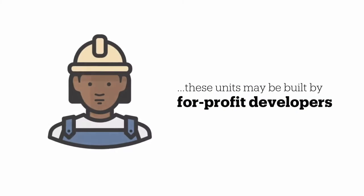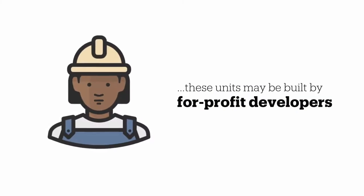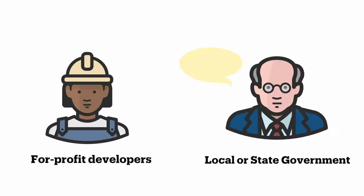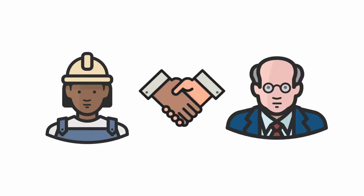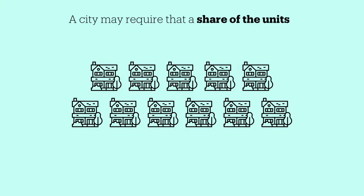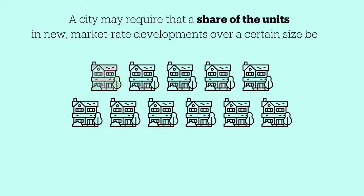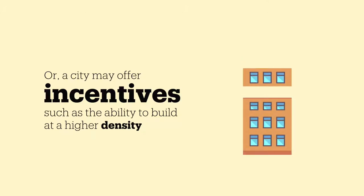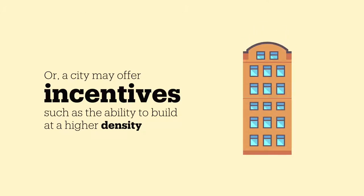These units may be built by for-profit developers who don't ordinarily focus on affordable housing, but are willing to do so in order to get their projects approved. For example, a city may require that a share of the units in new market rate developments over a certain size be affordable. Or, a city may offer incentives such as the ability to build at a higher density for developments that include affordable housing.